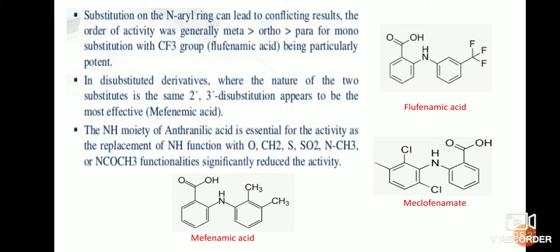The NH moiety of anthranilic acid is essential for activity. Replacement with other functional groups such as oxygen, CS₂, sulfur, sulfur dioxide, N-methyl, or N-COCH₃ groups significantly reduces the activity. So if the NH group is replaced by any of these groups, the activity is reduced.